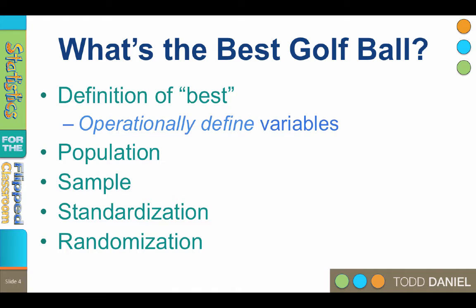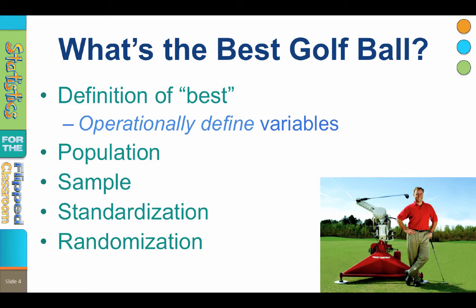And while we're thinking about randomization and standardization, what is another source of variability in how far a golf ball flies? The golfer. If we select a human being to drive each of the golf balls, that person will not swing the golf club exactly the same way every time, meaning part of the distance is due to random error. To minimize that random error, we could use a machine called Iron Byron — a golfing machine designed to create the same swing every time — to standardize the golf swing.